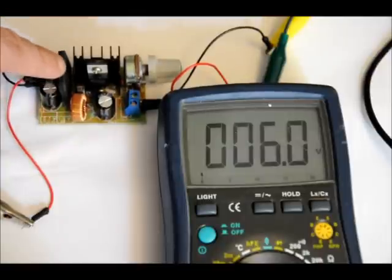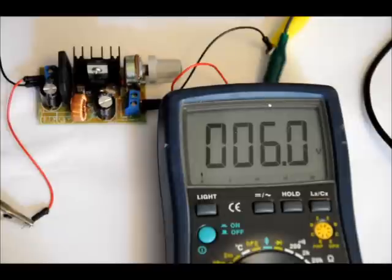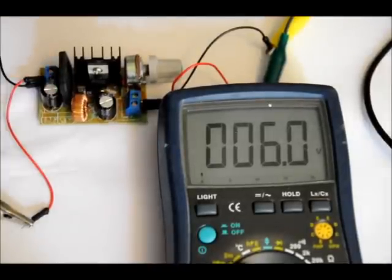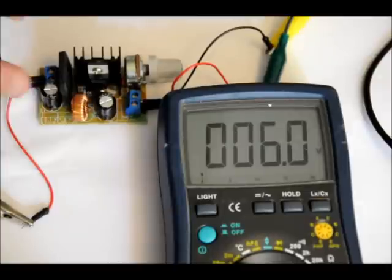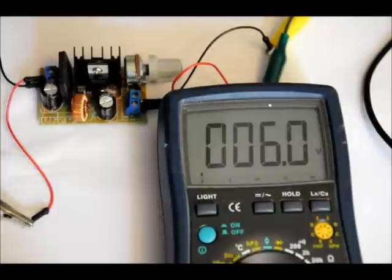So you can either populate the rectifier or depopulate it. If you feed DC at the input and you populate the rectifier you'll lose a couple of volts. But if you don't mind about that then it's fine. Otherwise you can not populate it. And I'll show you where you can put your positive and negative power.